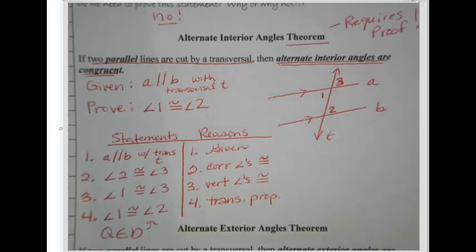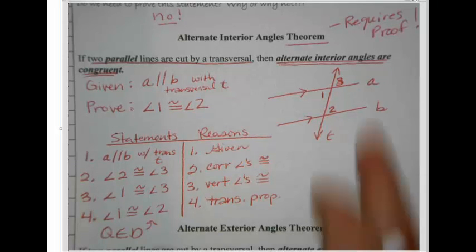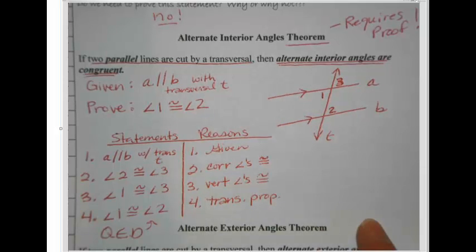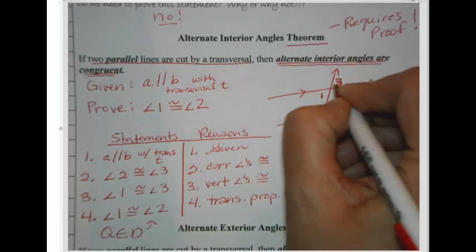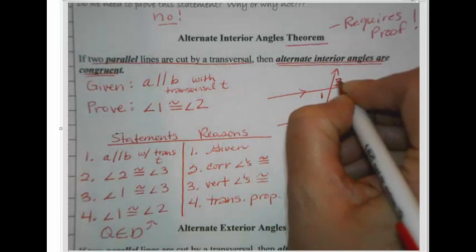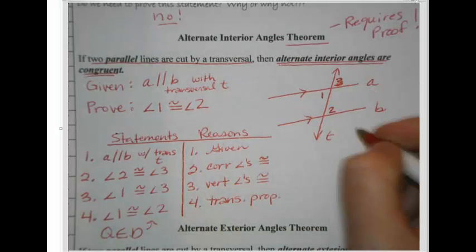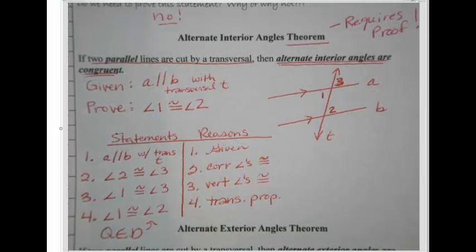Give the video a pause — I want you to try the alternate exterior angles theorem. You'll follow kind of the same strategy. Remember, the key strategy is labeling that third angle, picking it corresponding to one of the angles you have. Pause the video and then come back and check your work.